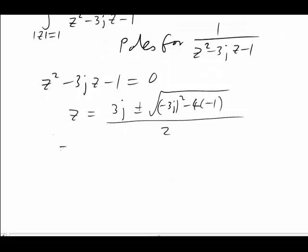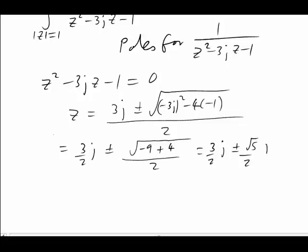That simplifies to 3 over 2 j plus or minus. And in the square root, we've got negative 9 plus 4. They're all still over 2, which is 3 halves j plus or minus root 5 over 2 j.